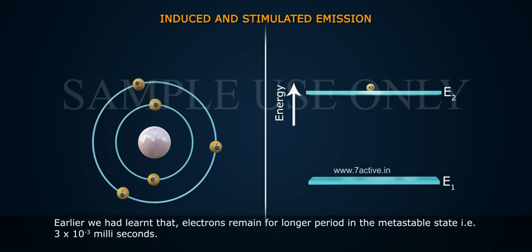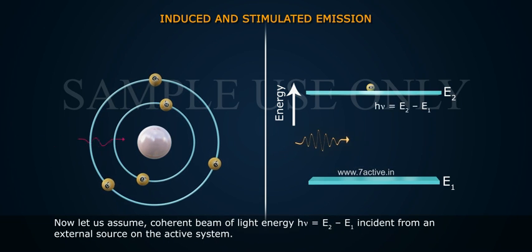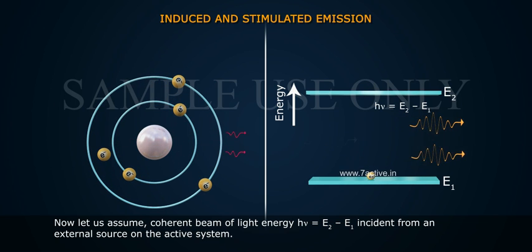Now, let us assume coherent beam of light energy H nu is equal to E2 minus E1 incident from an external source of the active system.